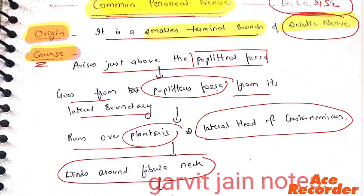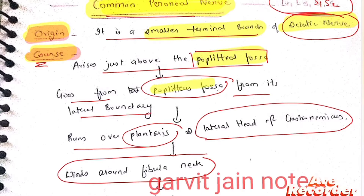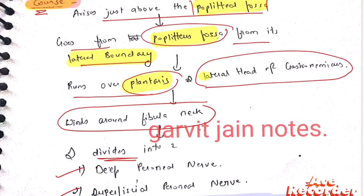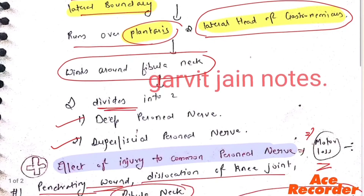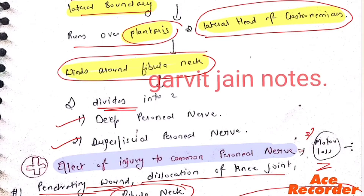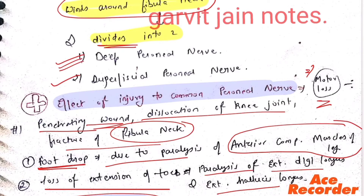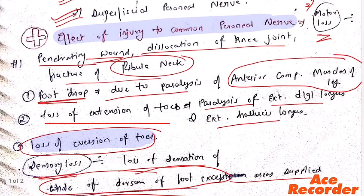Regarding the course, it arises just above the popliteal fossa, goes from the popliteal fossa from its lateral boundary, then goes to plantaris, then lateral head of gastrocnemius, then winds around the fibular neck and divides into two branches: the deep peroneal branch and the superficial peroneal branch.